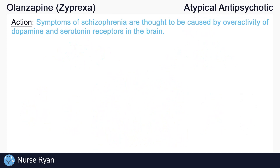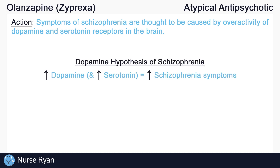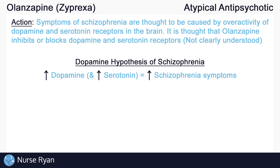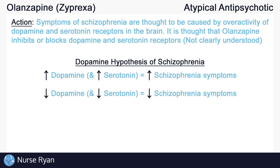The symptoms of schizophrenia and other mood disorders are thought to be caused by overactivity of different neurotransmitters in the brain, especially dopamine and serotonin. So more dopamine and more serotonin causes more symptoms. It is thought that olanzapine inhibits dopamine and serotonin receptors, so less dopamine and less serotonin should cause fewer symptoms. But keep in mind that schizophrenia and olanzapine are still not completely understood.